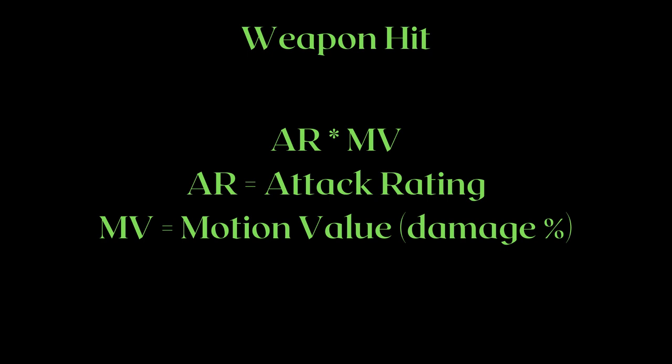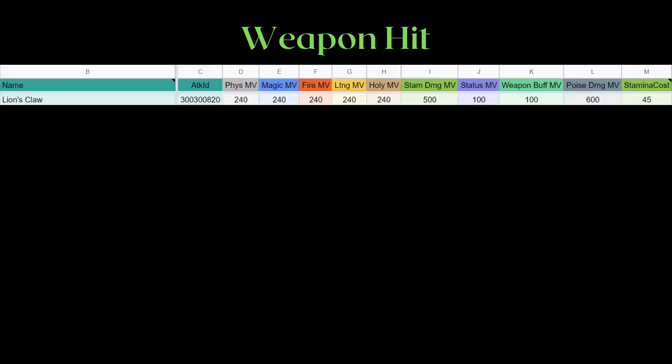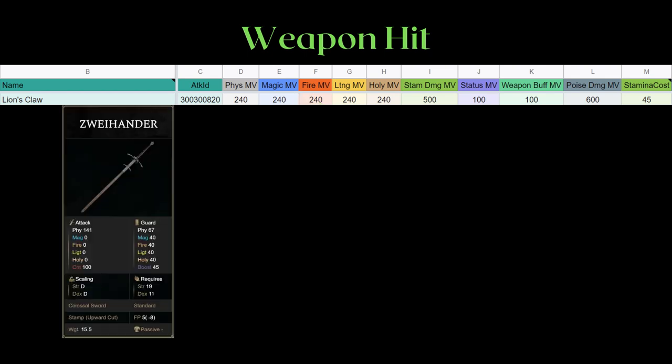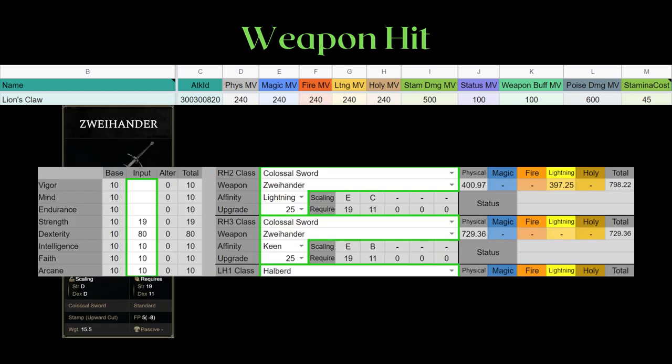Let's take a look at a quick example. Lion's Claw is a weapon hit type weapon art. For the weapon art MV spreadsheet, weapon hits will only have the values on the left side of the sheet under columns like physical, magic, lightning MV. While all the MV values are listed, not all of them will always be used. For example, if we're using a lightning infused Swihanzer at this given level of stats, it has a total of 798 AR.